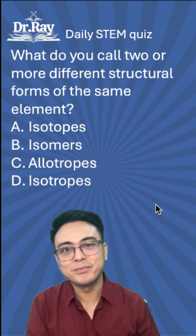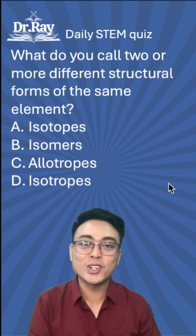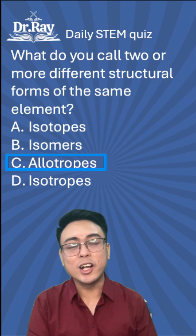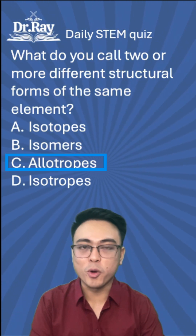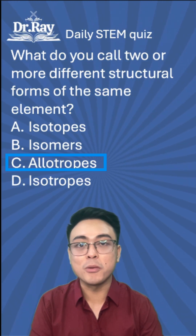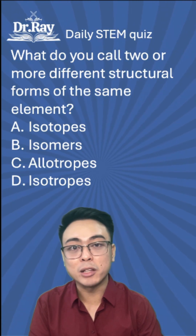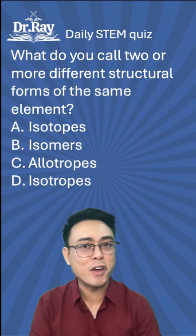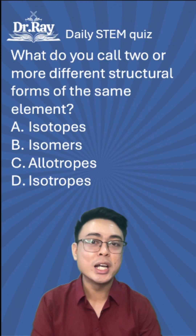Pause if you need more time. The correct answer is letter C, allotropes. Allotropes are two or more different materials that are made of the same element, but they might not look the same and they might have very different properties.